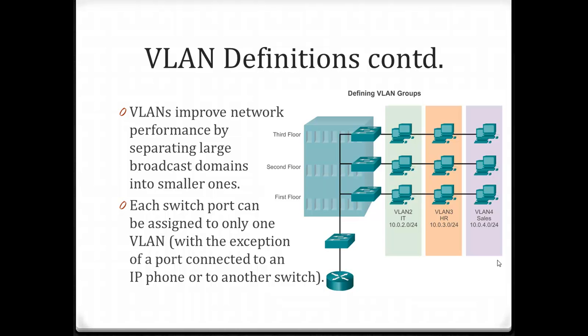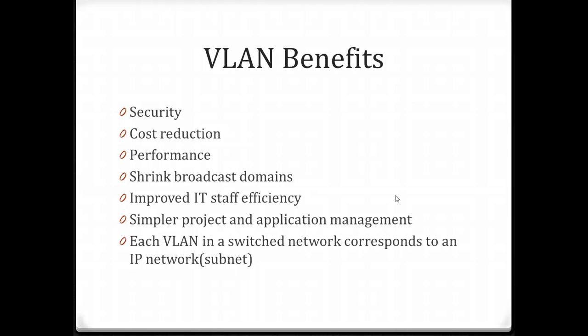One thing to note is that each switch port can only be assigned to one VLAN. A computer connected to a port on the switch could only be part of one VLAN — it cannot be part of both the IT VLAN and the HR VLAN. We want to segment our networks with VLANs because they offer greater security, cost reduction, and performance. They shrink our broadcast domains and can improve IT staff efficiency. Each VLAN in a switch network corresponds to one IP network or subnet.